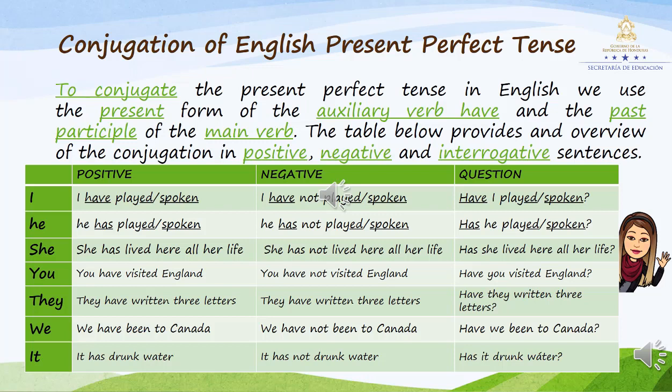She has lived here all her life. Ella ha vivido aquí todo este tiempo. Has she not lived here all her life? Ella no ha vivido aquí todo este tiempo. Has she lived here all her life? Ella ha vivido aquí todo este tiempo. You have visited England. Usted ha visitado Inglaterra. You have not visited England. Usted no ha visitado Inglaterra. Have you visited England? ¿Alguna vez usted ha visitado Inglaterra? They have written three letters. They have not written three letters. Have they written three letters? Ellos han escrito tres cartas. Ellos no han escrito tres cartas. ¿Van a escribir ellos tres cartas?